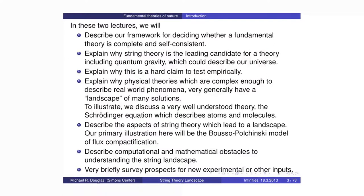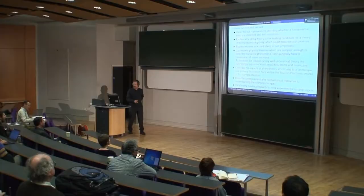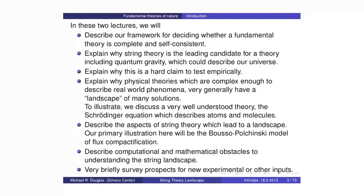I'll continue to review what we said last time. We talked about why string theory has this place at the top of the list of possible candidate theories of quantum gravity, and why it doesn't at this point make clear testable predictions that we expect to test. There are many things that we predict which we verify, but we'd rather have something with more chance of being falsified.